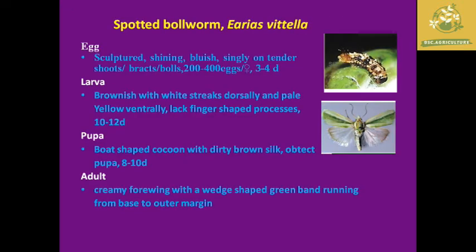For identification: the egg is a sculptured egg; the larva is brownish with a white streak dorsally and pale yellowish sides — the larva is the destructive stage; the pupa forms a boat-shaped cocoon with dirty-brown silk and is an upturned pupa with a pupation period of 8 to 20 days. The adult is a creamy four-winged moth with a wedge-shaped band that is green and milky white in color.